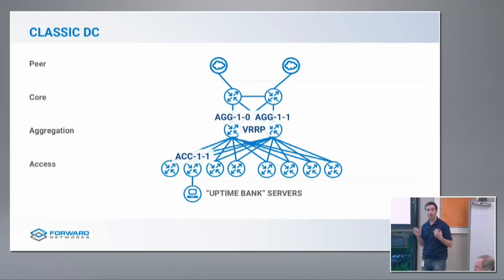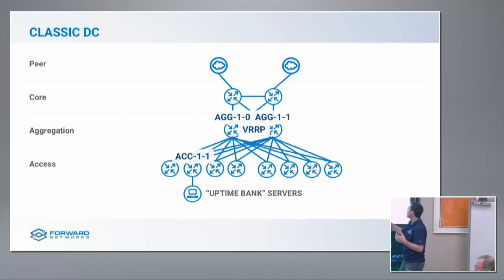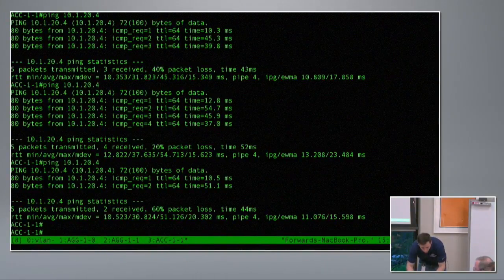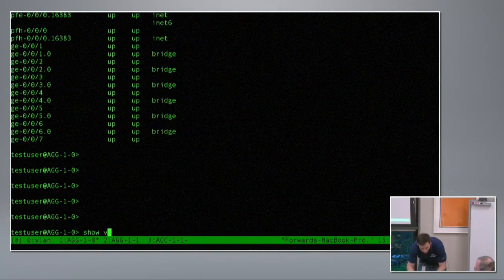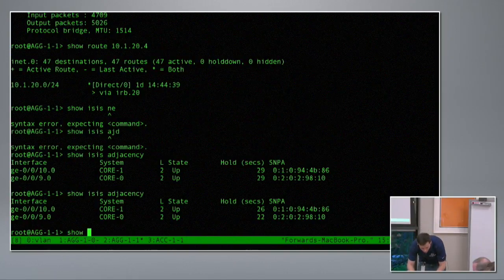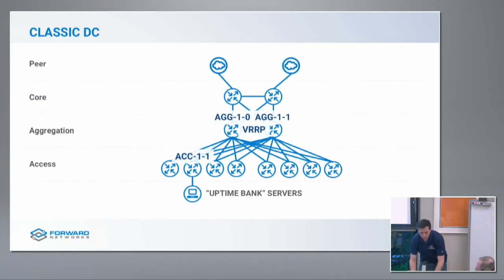My one saving grace is I've engineered this network for redundancy. On aggregation switch ag10 and aggregation switch ag11, I'm running VRRP between them. So if ag10 goes down, all my traffic should fail over to ag11. We can even log into those boxes and verify — ag10 show VRRP: up, up, up. Ag11 show VRRP: up, up, up. My network is engineered for redundancy.